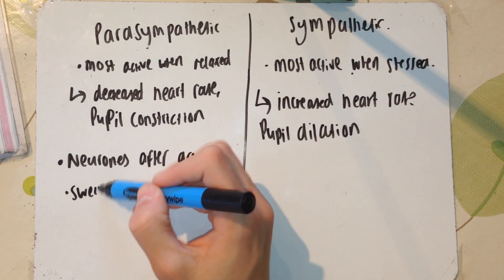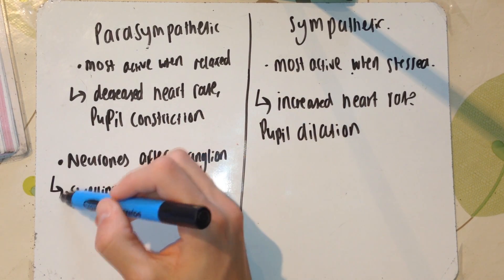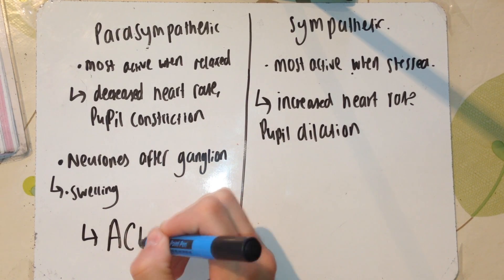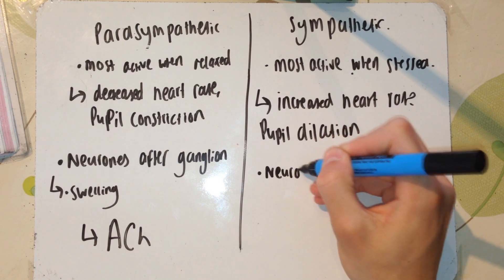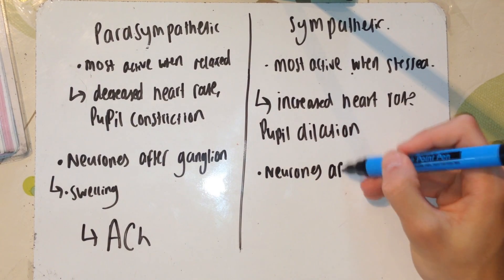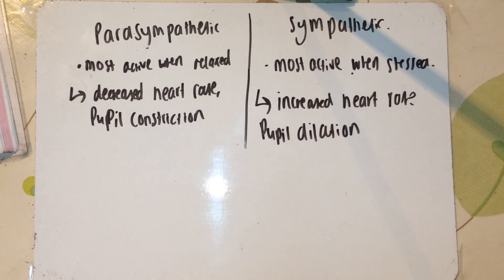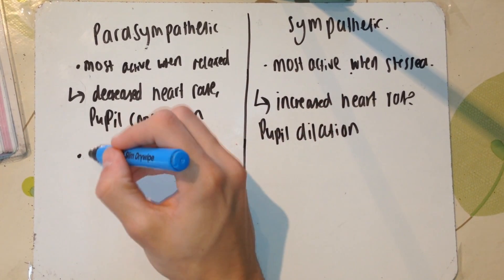In the parasympathetic nervous system, it's like normal: ACH, acetylcholine, normal neurotransmitter to move. But in times of stress, in the sympathetic nervous system, the neurons after the ganglion are going to be secreting noradrenaline, which has the effects of increased heart rate and pupil dilation.